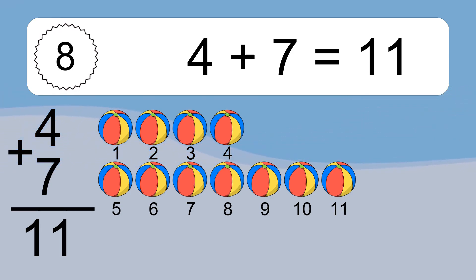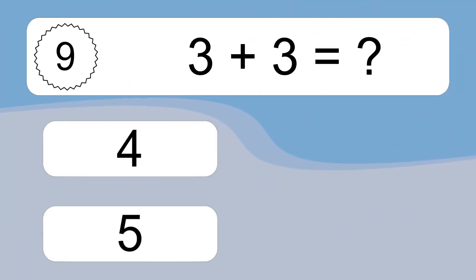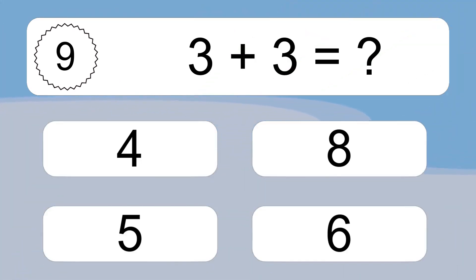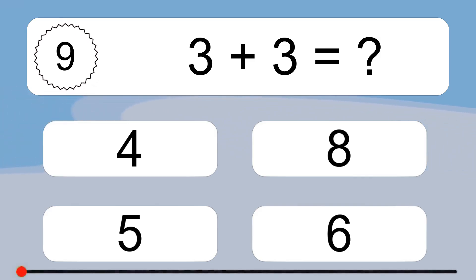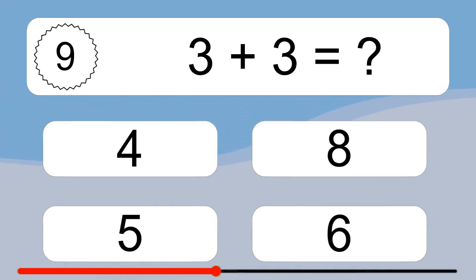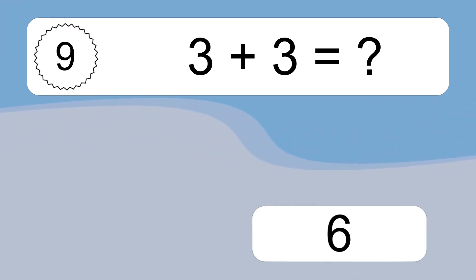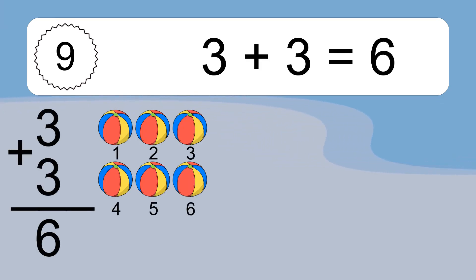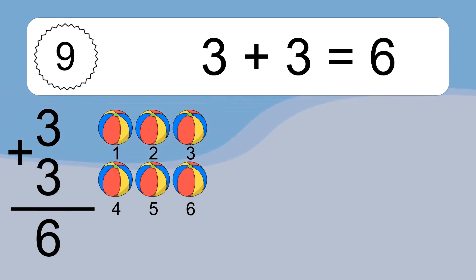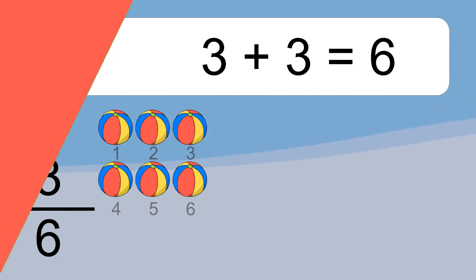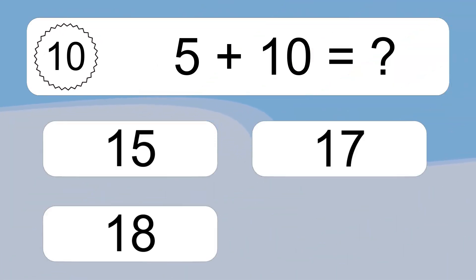3 plus 3 equals what? 3 plus 3 equals 6. Let's count it. 1, 2, 3, 4, 5, 6.